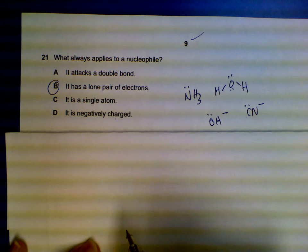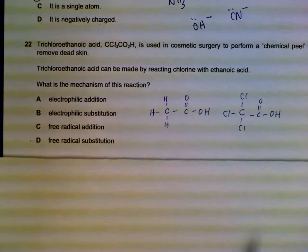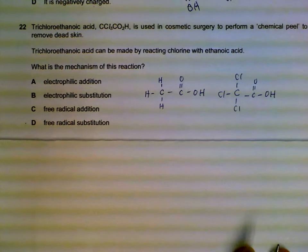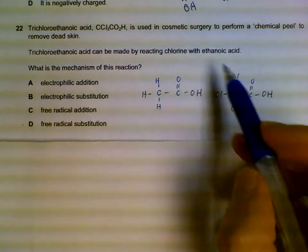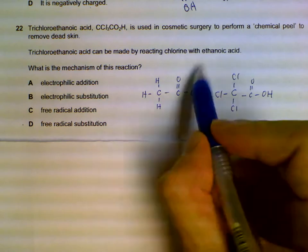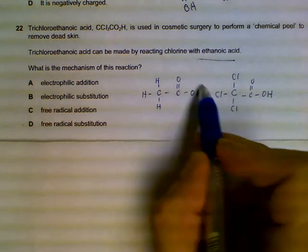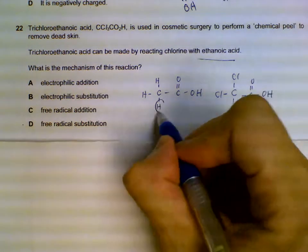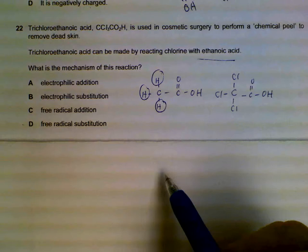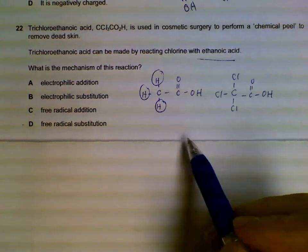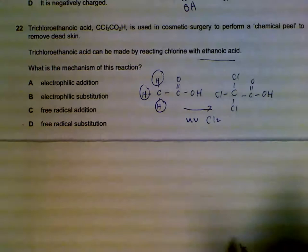Question 22: How can we change from ethanoic acid to trichloroethanoic acid? This is ethanoic acid, and trichloro means we are replacing the hydrogens with chlorine. We are removing the hydrogens from the alkane groups. This will require free radical substitution with UV light together with chlorine atoms.